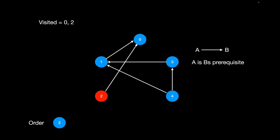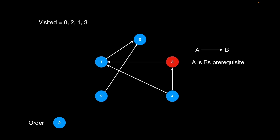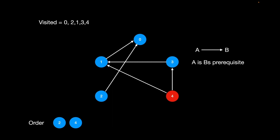So 2 could be the first course we take. After that we look at 0's other neighbor which is 1. Can we take 1 as the next course? No, because 1 has prerequisites — its neighbors are 3 and 4. We start with 3, but can't take 3 because 3 has a prerequisite of 4. So we go to 4, and yes, we can take 4 because 4 has no prerequisites.